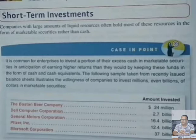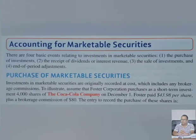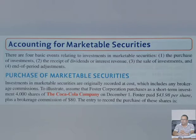For accounting of marketable securities, there are basically 4 types of entries. The first is the purchase of marketable securities. When you purchase marketable securities, you record them at cost price.